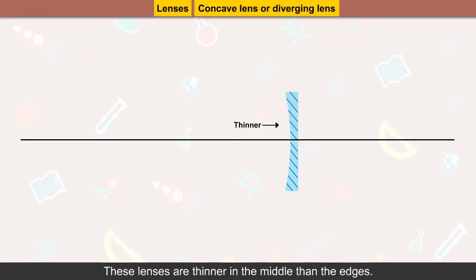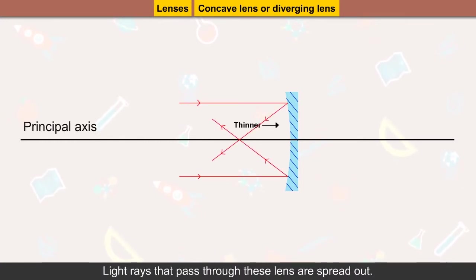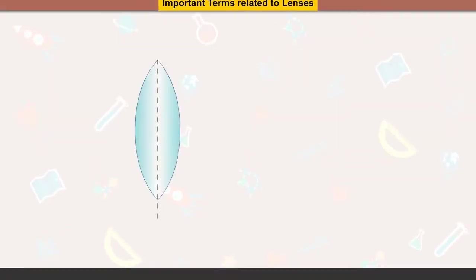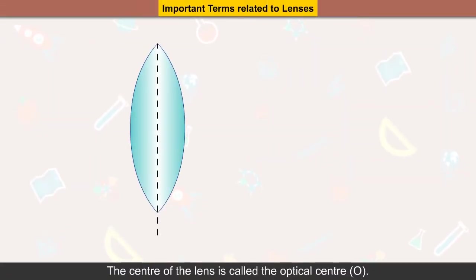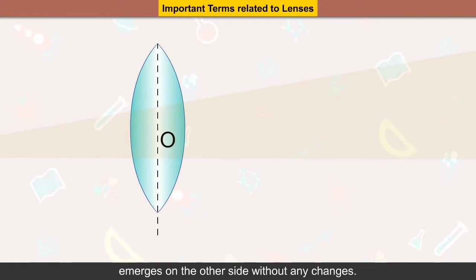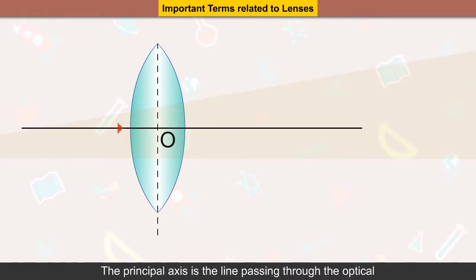Concave lenses or diverging lenses are thinner in the middle than at the edges, and light rays that pass through them are spread out. The center of the lens is called the optical center O. A ray of light that passes through the optical center emerges on the other side without any change.